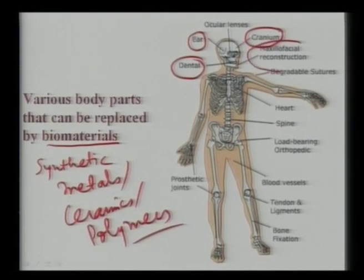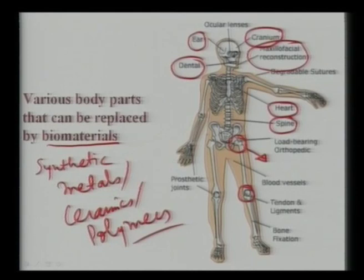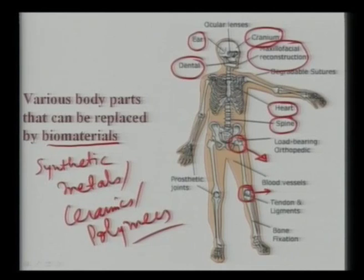Maxillofacial reconstruction also uses synthetic materials. Heart valves can use carbon or polytetrafluoroethylene (Teflon). Spinal load-bearing implants are also used. For orthopedic implants like hip or knee joints, a combination of materials is needed — for example, in a hip joint the stem is made of titanium, the femoral ball can be ceramic like alumina, and the articulating surface can be made of ultra-high-molecular-weight polyethylene or high-density polyethylene.